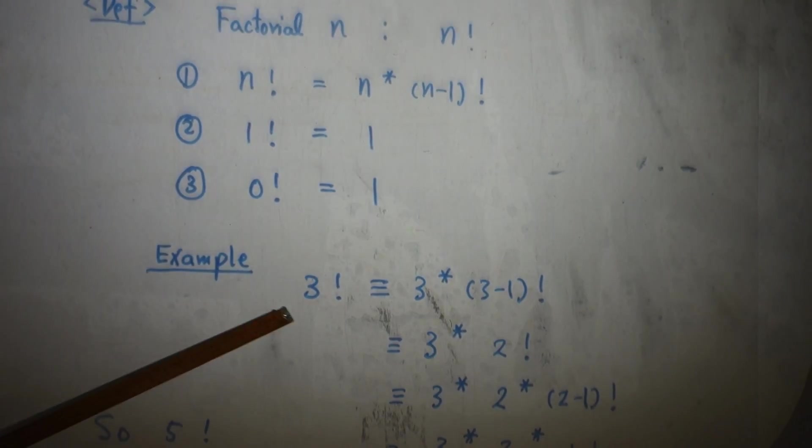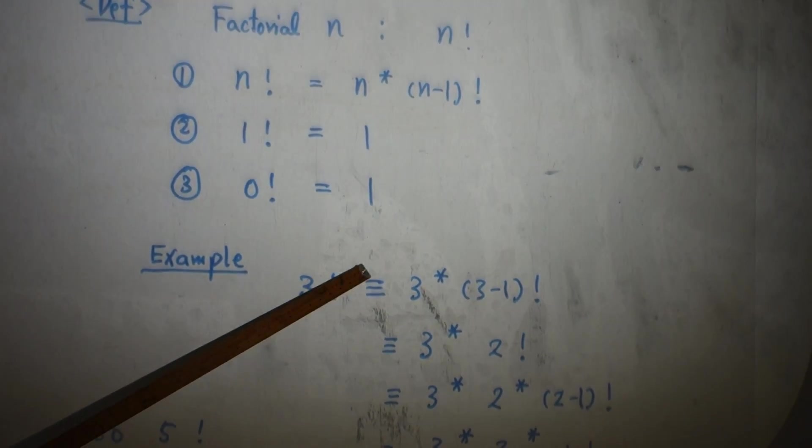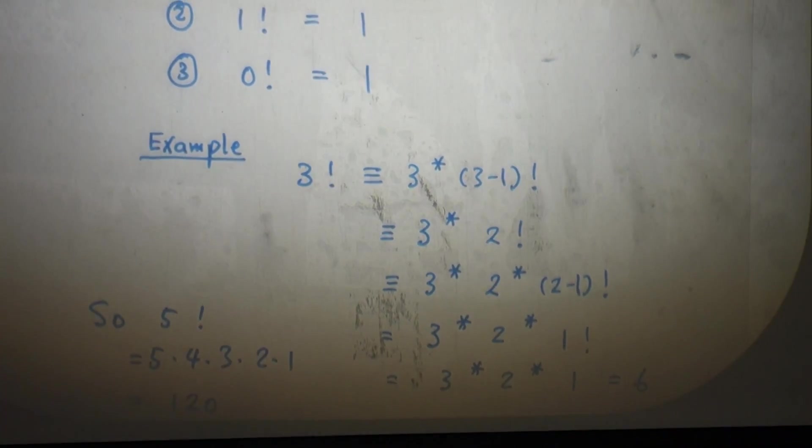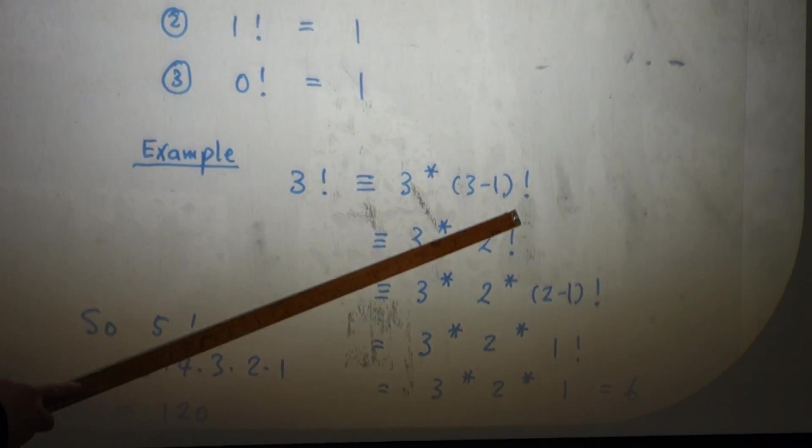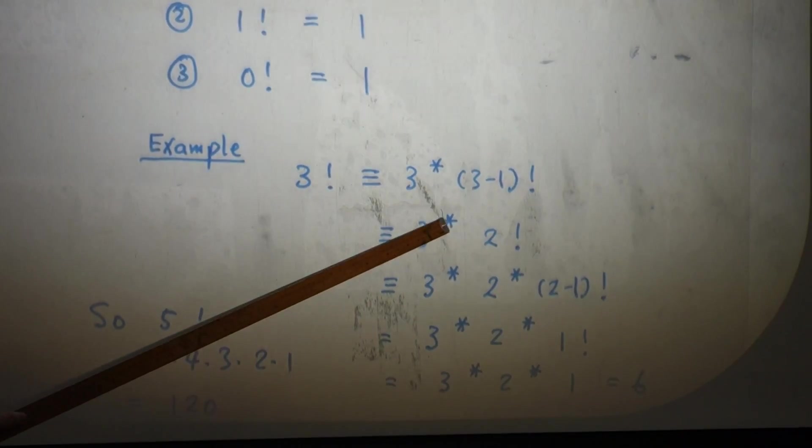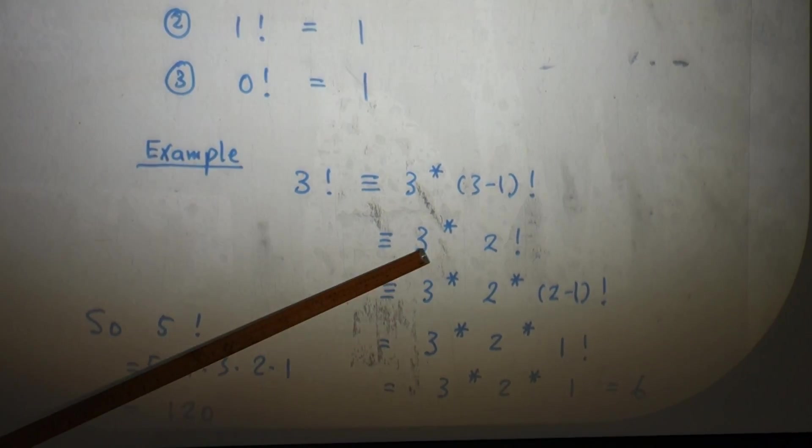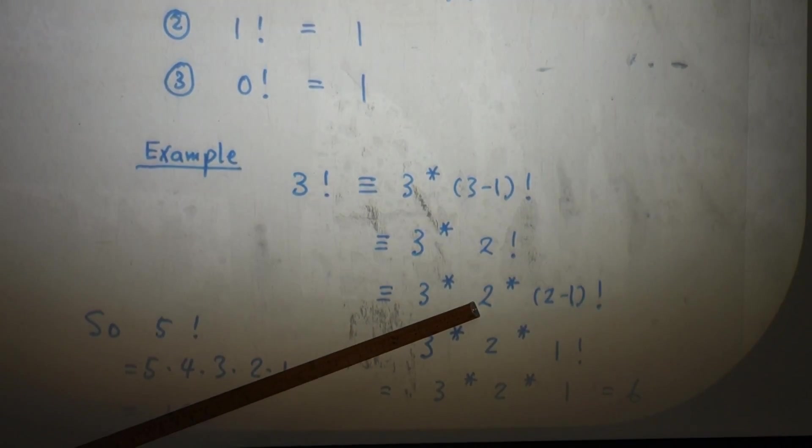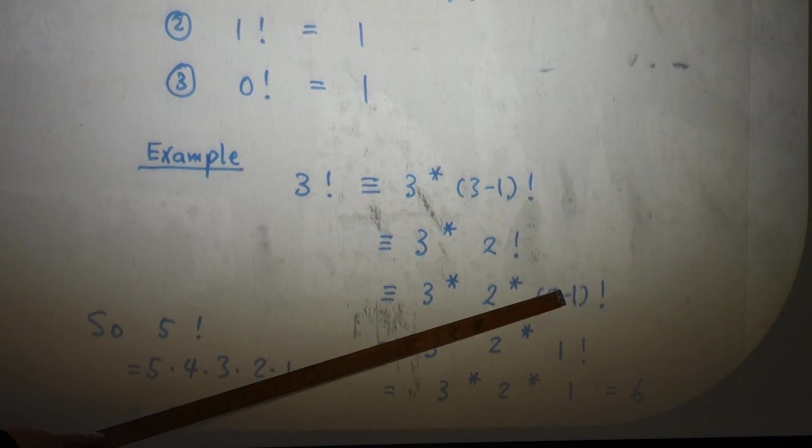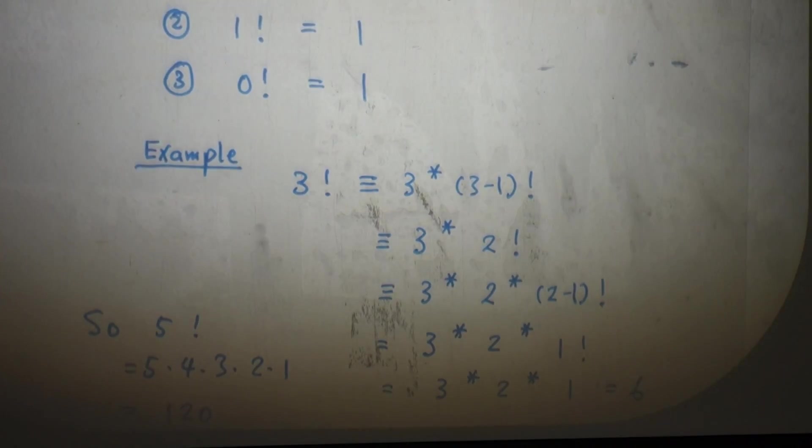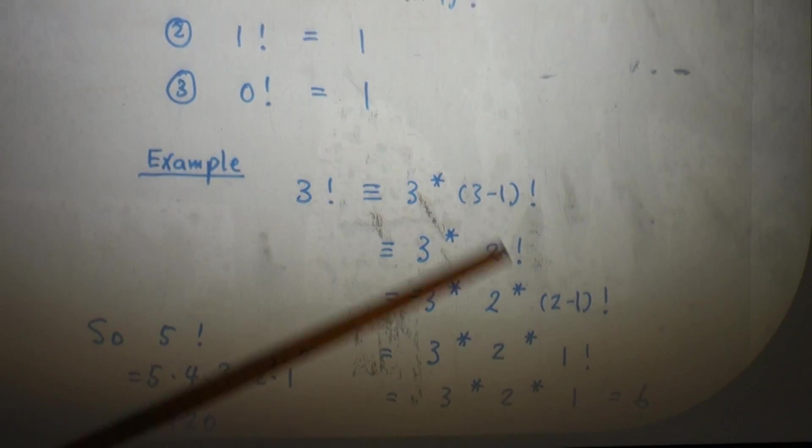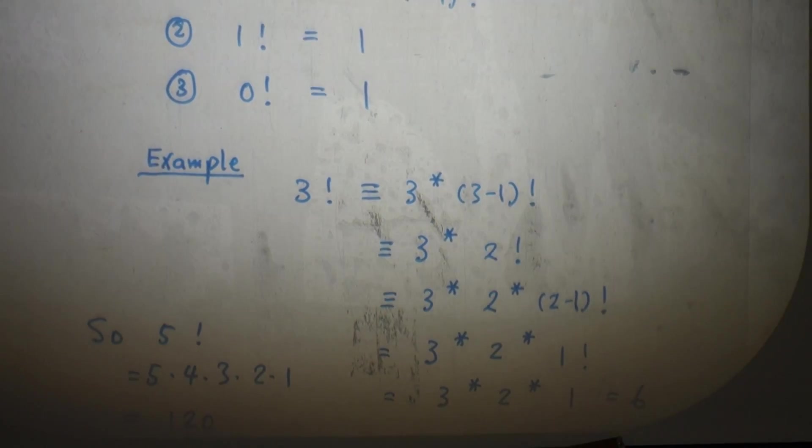Example: 3! is defined to be 3 times (3-1)!. But 3 minus 1 factorial is just 2!, so this is 3 times 2!. But again, 2! can be written as 2 times (2-1)!, so it's 3 times 2 times 1!. 1! is defined to be 1, so 3! is 6.